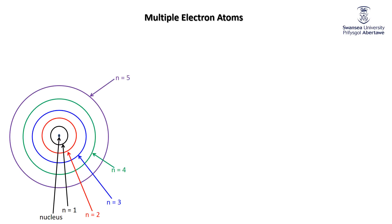Let's think about that orbit model. There's the nucleus in the middle, then the first orbit, second orbit, third orbit, and so on. For hydrogen in the ground state, the electron is in that first orbit. Instead of just saying one electron in the first orbit, we label it N equals one — one electron in that first energy level, written as N equals one to the power of one. It's actually saying one electron in that first energy level.